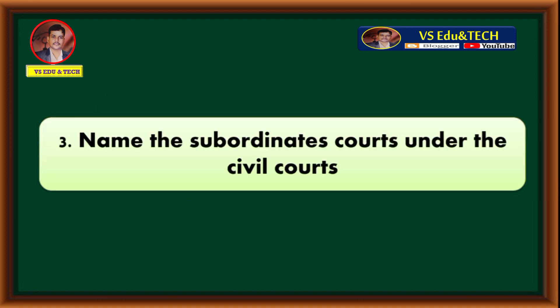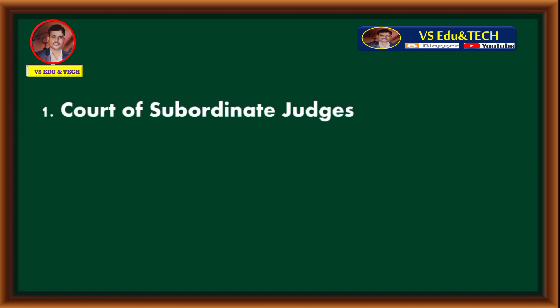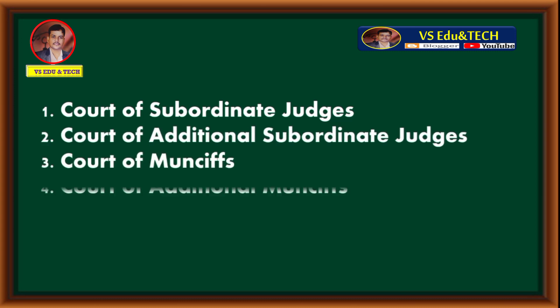Third question: Name the subordinate courts under the civil courts. They are: Court of Subordinate Judges, Court of Additional Subordinate Judges, Court of Munsiffs, and Court of Additional Munsiffs. These are the subordinate courts under the civil courts.